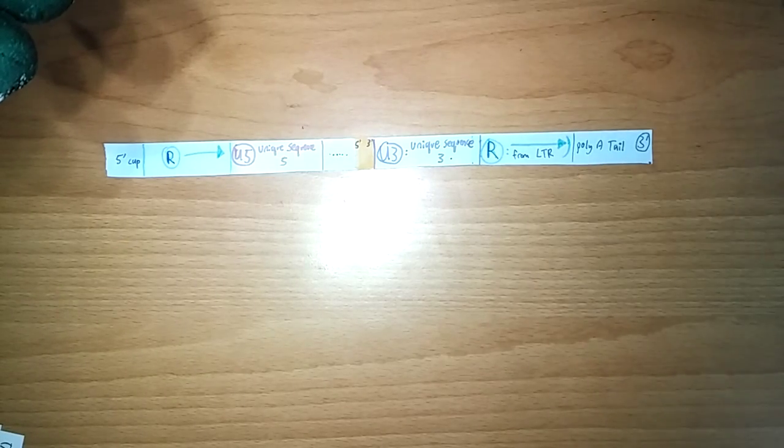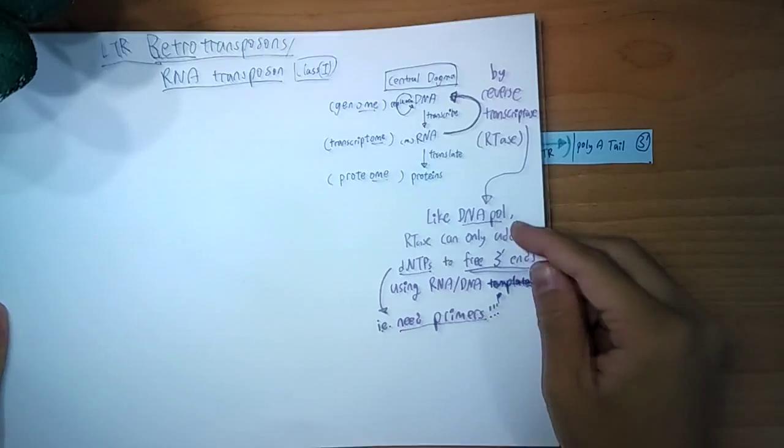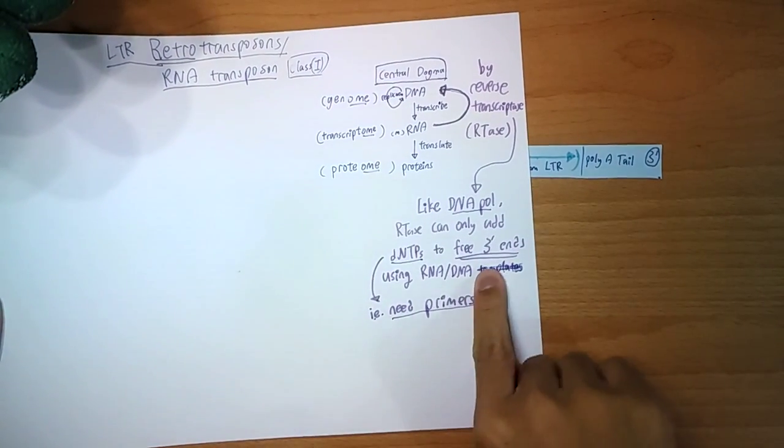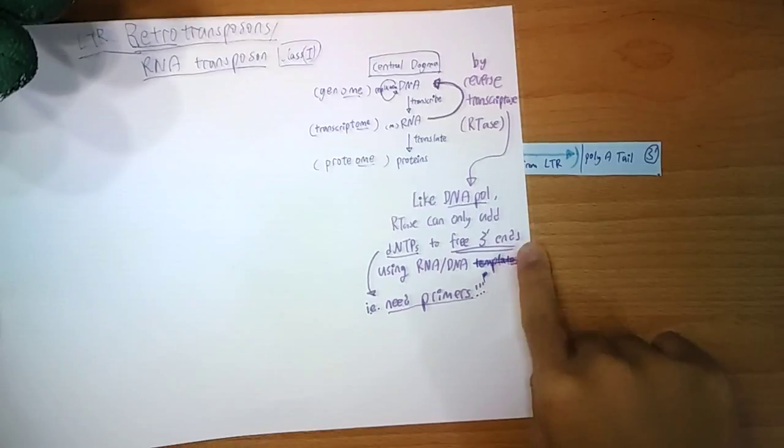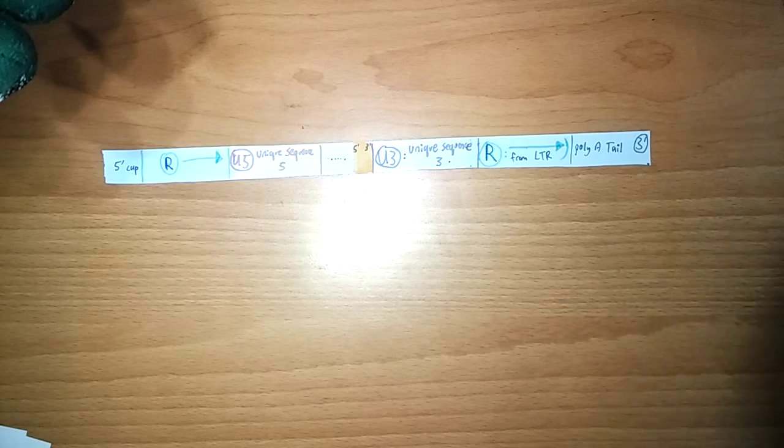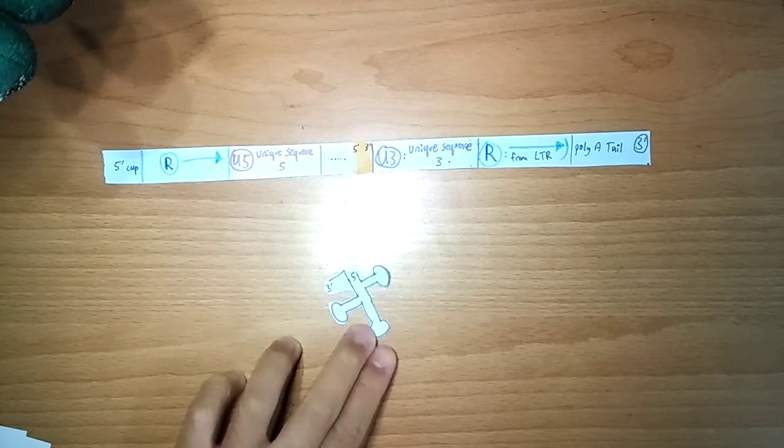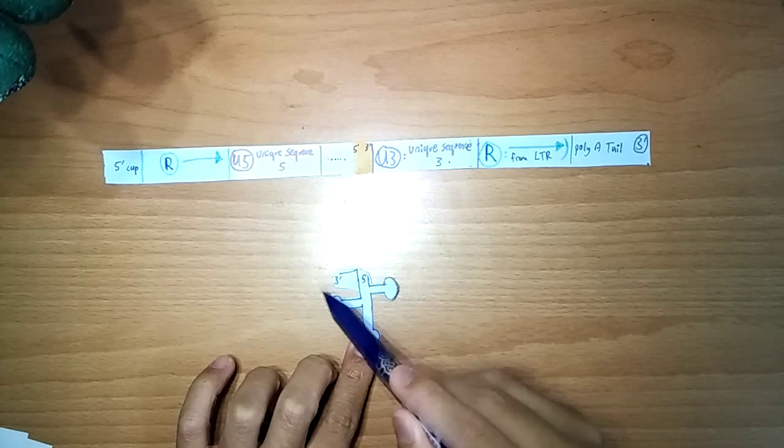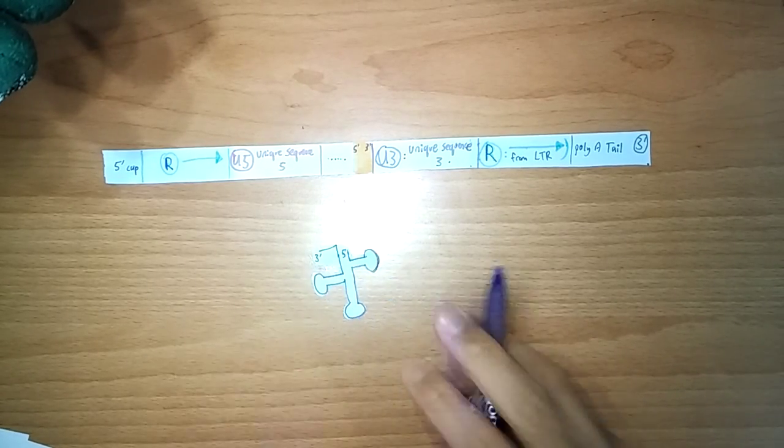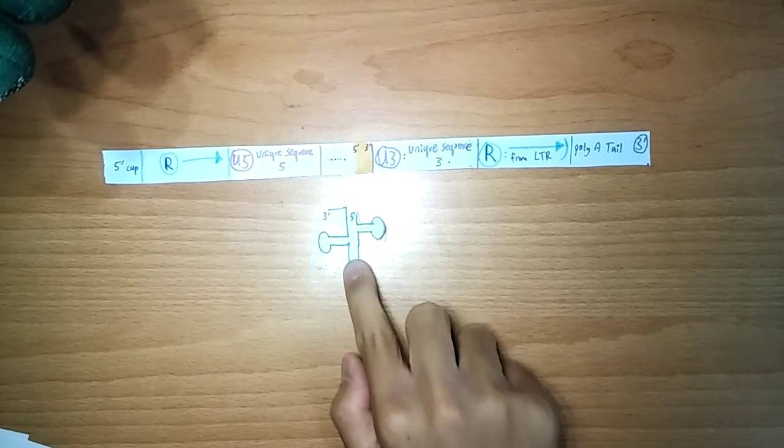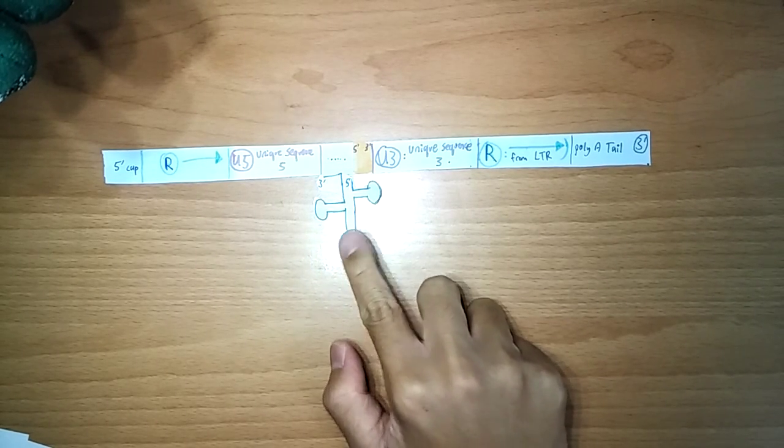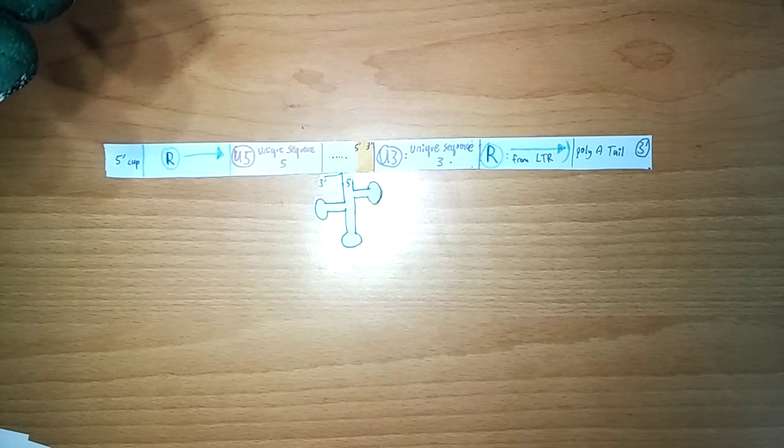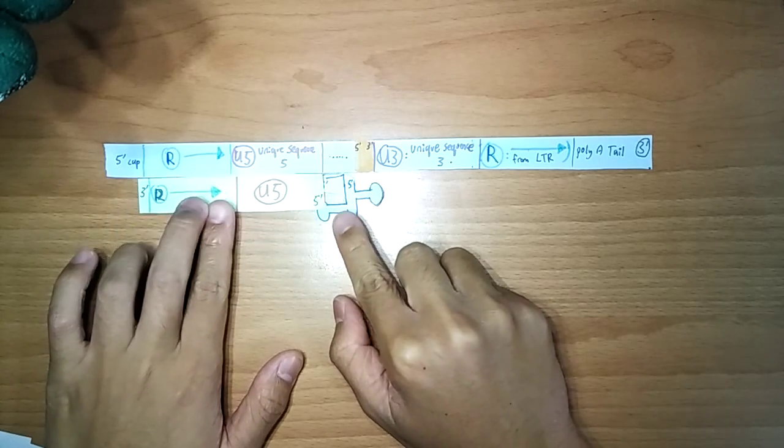From here, remember, as previously mentioned, reverse transcriptase can only add DNA nucleotides to free 3' ends. So we will need primers. And to start off, it uses a tRNA primer. I'm not sure whether this can be charged or not, like whether there's an amino acid attached here. But let's say it is. So it will bind here. And it will act as your primer. Now you have a free 3' OH end. So you will extend it all the way.